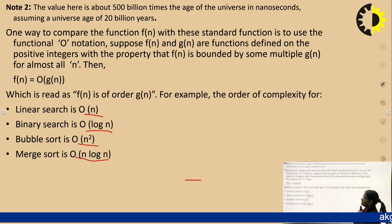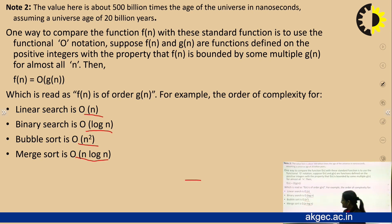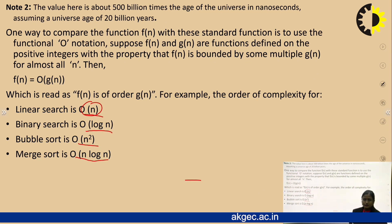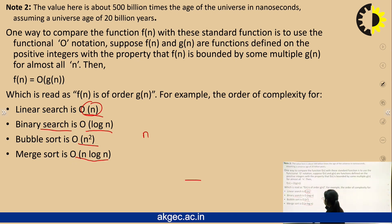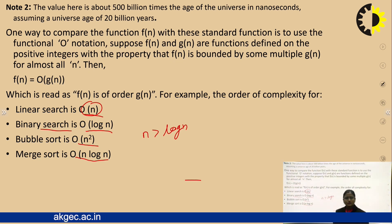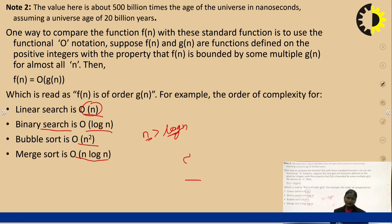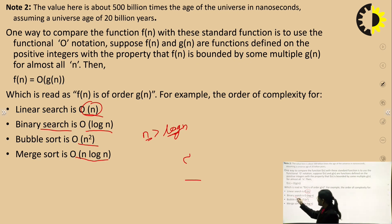These are the time complexities of different algorithms. Linear search is O(n), which takes more time than binary search O(log n), because n is always greater than log n. So binary search behaves more efficiently than linear search — binary search is better than linear search.